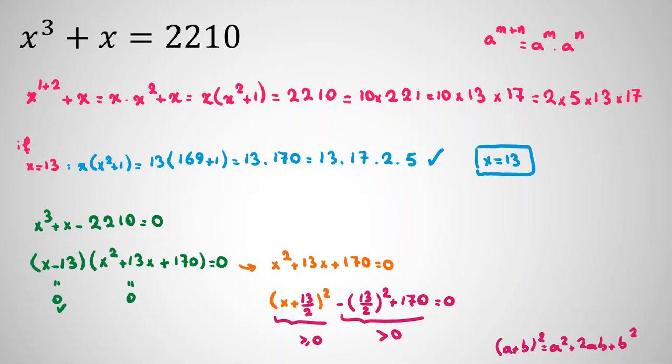It is greater than or equal to zero, so their sum is positive, cannot be zero. This one is positive because (13/2)² is 6.5² which is less than 7² = 49, but it will be plus 170, so it is positive.